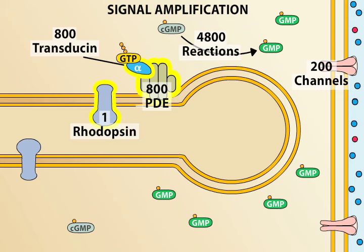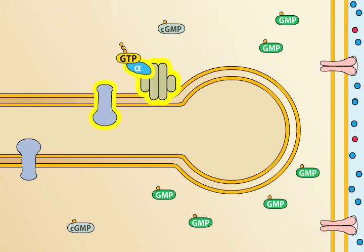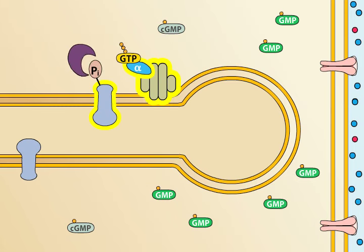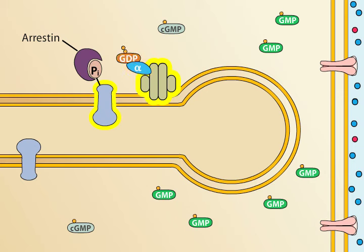Proteins in the photoreceptor limit the duration of this amplifying cascade and restore the various molecules to their inactivated states. Activated rhodopsin is rapidly phosphorylated by rhodopsin kinase, which permits the protein arrestin to bind to rhodopsin. Bound arrestin blocks the ability of activated rhodopsin to activate transducin, thus effectively truncating the phototransduction cascade. By hydrolyzing GTP, activated transducin has a built-in timing mechanism to turn itself off shortly after becoming activated.